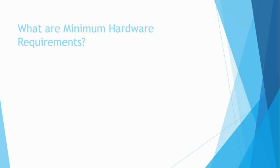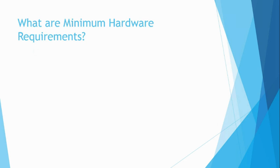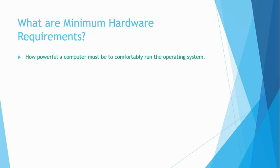To begin with, let's start by looking at what minimum hardware requirements are. Every operating system, Microsoft and non-Microsoft, comes with its own set of minimum hardware requirements. When referring to an operating system, we are essentially talking about how powerful a computer must be in order to install that operating system. Every reputable vendor who provides an operating system should provide a list of minimum hardware requirements for that operating system.